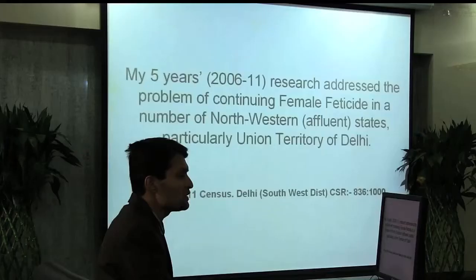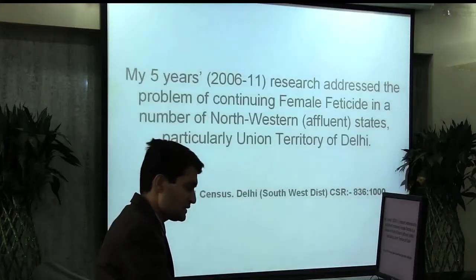My five-year research from 2006 to 2011 addressed the problem of continuing female feticide in a number of northwestern, that is, affluent states, particularly the Union Territory of Delhi. As per the 2011 census, in the southwest district of Delhi, the child sex ratio was 836 females for 1,000 males.